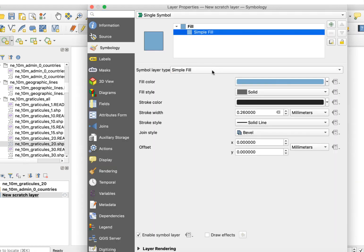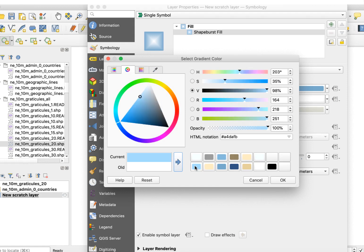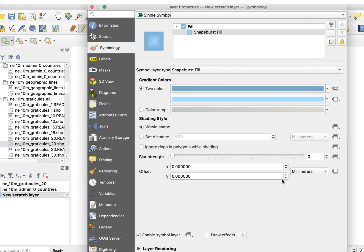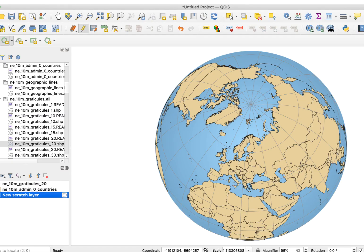Set Simple Fill to Shape Burst Fill and select the colors you want. The second color will be the inside of the gradient. In the shading style area, I usually click the Set Distance box. This lets me control the gradient. Try 25 as a starting value. You can also add a blur to the effect. When you like what you have, click OK.